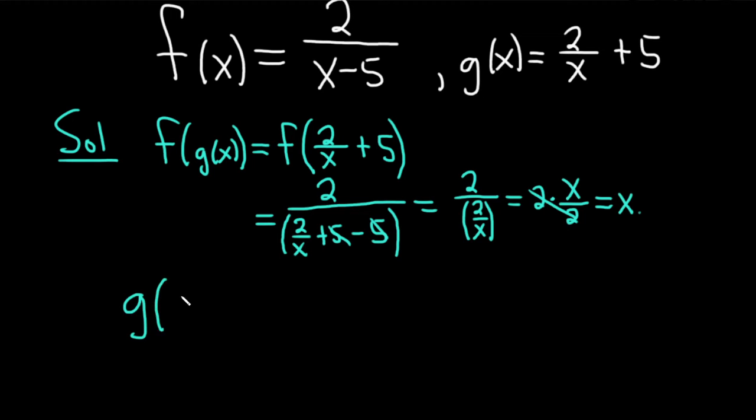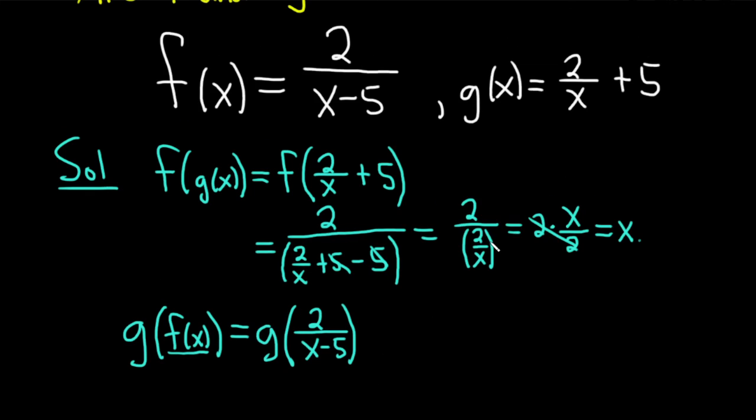So g of f of x is equal to, so this time we'll start by replacing the inside piece with what it is. This is g of, well f of x is 2 over x minus 5. So now we look at g. So g is up here, so it's 2 over x plus 5. So basically what we're going to do is put this where the x is in the formula for g. So it's 2 over, and then we have x, but our x is this. So we're going to put parentheses 2 over x minus 5. It's important to put the parentheses so you know how to divide correctly. And then plus 5.